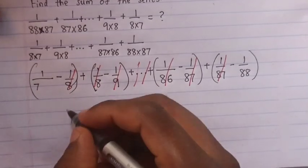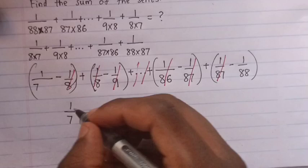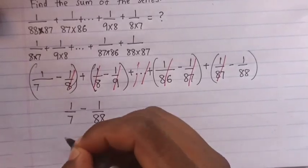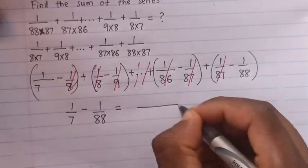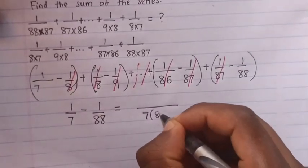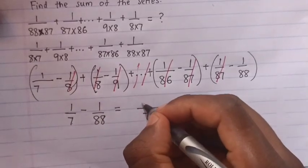So here it will remain 1 over 7 minus 1 over 88. Okay, for here this equals to 7, 88, divide by here, it will be 88 minus 7.